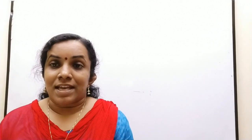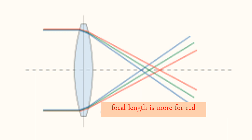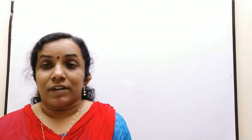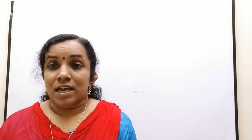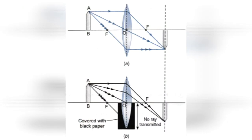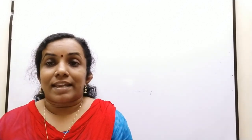Longer wavelengths deviate less and shorter wavelengths deviate more, so violet light has lesser focal length than red light. If a part of the lens is covered, the focal length will not change, but the image will be blurred due to less intensity of light falling on the lens. Hence the intensity of the image changes, while the position, size, and nature of the image will not change.